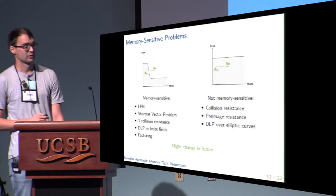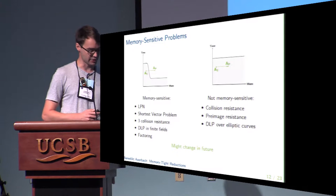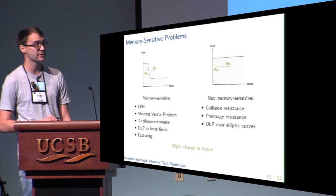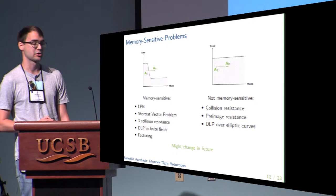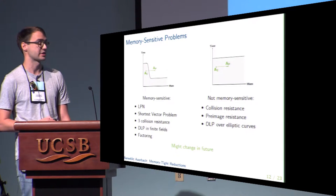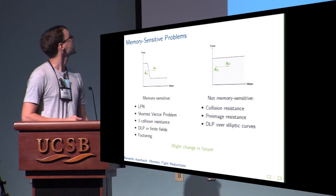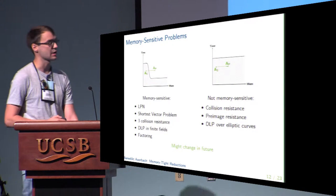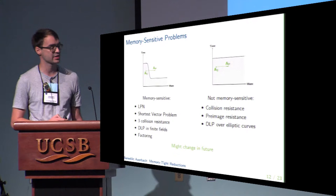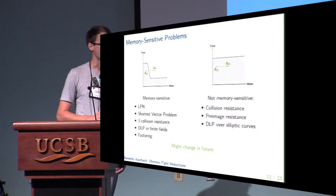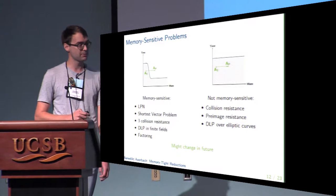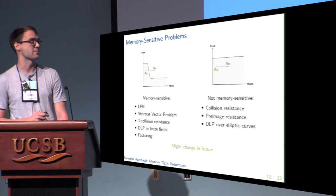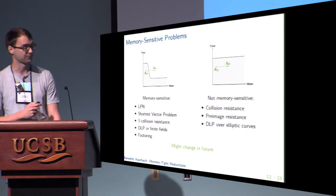For some problems which provide particularly good time-memory trade-offs, memory can be crucial when making concrete security statements. We call these problems memory sensitive, and they include LPN, the shortest vector problem, the problem of finding a collision of three points in a hash function, and discrete logarithm over finite fields.